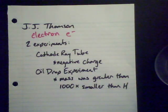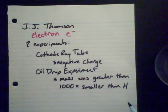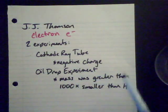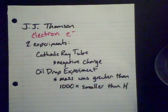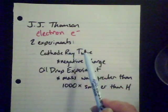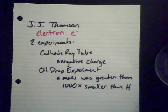If Dalton's idea about atoms is correct, there could be nothing smaller than the smallest of the atoms. So this was revelatory. J.J. Thompson said: I have this particle, it's negatively charged, it's smaller than a hydrogen atom — we're going to call it an electron. And that's why we symbolize it with an E to the negative sign, because of its negative charge.